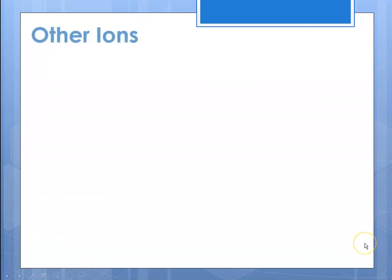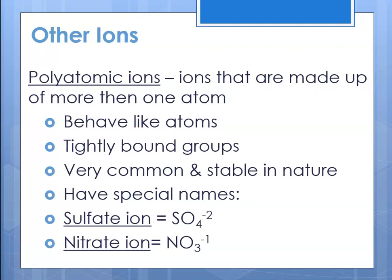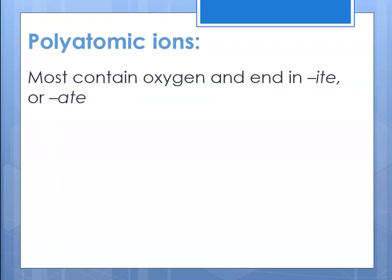Some other ions we have to talk about are the polyatomic ions — ions made up of more than one atom. They're actually covalently bonded atoms, but they have a net charge, so they are ions. They behave like a single atom, are very tightly bonded, very common, and extremely stable in nature. They all have special names, and it's smart to memorize the group 5 and 6 ions because they come up a lot. Sulfate ion is SO₄²⁻ and nitrate is NO₃⁻.